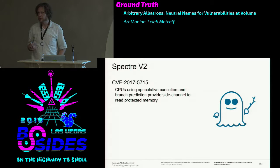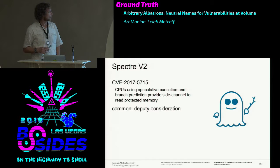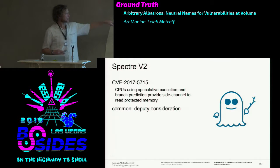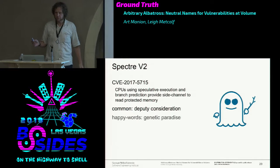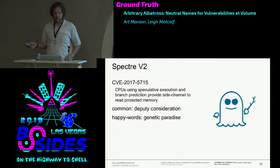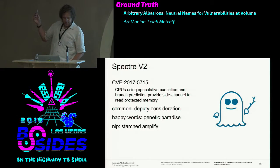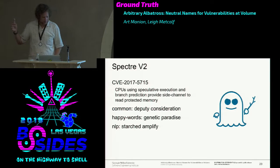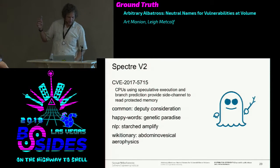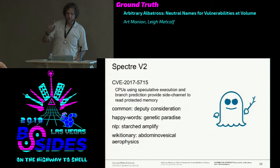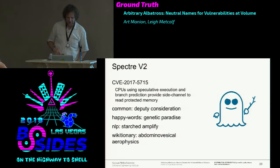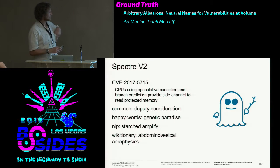This is Spectre variant B2. But all this stuff is just lost if you don't have a table somewhere. So the common word list calls it 'deputy consideration,' the happy words list is 'genetic paradise,' we've got 'starched amplify,' and the Wiktionary one is 'abdominovesical aerophysics.' Congratulations—I should get myself a sticker for that.